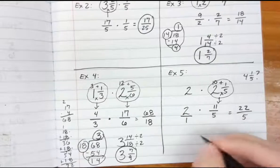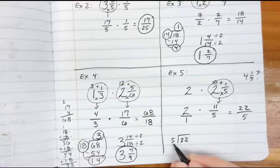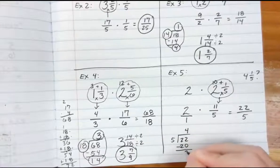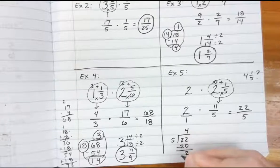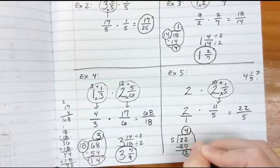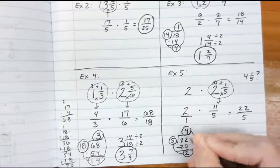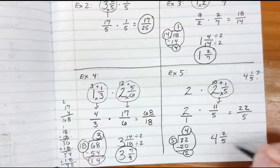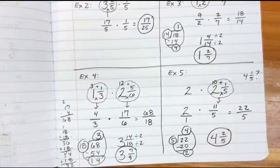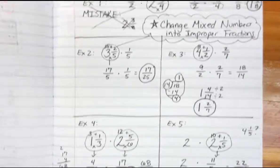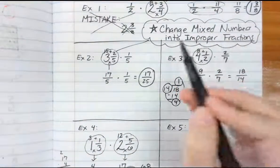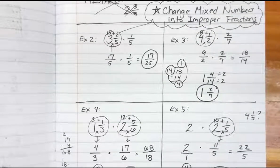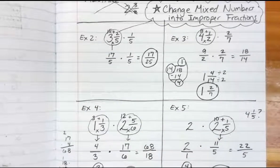Twenty-two over five is top-heavy, so divide: five goes into twenty-two four times since four times five is twenty, with a remainder of two. So the answer is four and two-fifths. Two-fifths is already simplified because two will not divide five. The biggest thing to remember — as shown in the cloud — is to change all mixed numbers into improper fractions. As you practice, please send me an email if you'd like extra tutoring, because this is the most involved process we've done so far with multiplying fractions. Good luck on your practice.